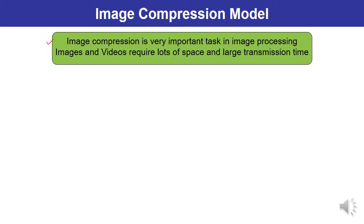Images and videos require lots of space for storage. At the same time, if the size of image and video is very large, obviously it takes a long time for transmission and it will give bandwidth constraints as well. Therefore image compression is necessary for both storage and transmission.